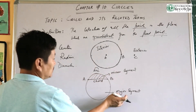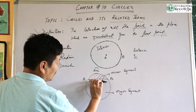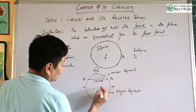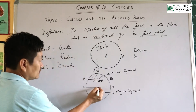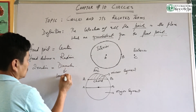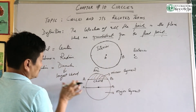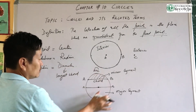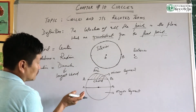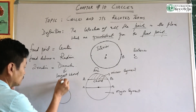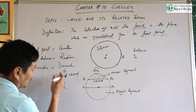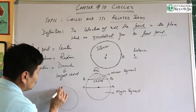How long is the longest chord? The longest chord is called the diameter. If you take the diameter, it is the longest chord of the circle. Similarly, the diameter divides the circle into two equal parts, each called a semicircle. The circle is then split into two semicircles.